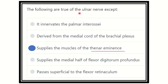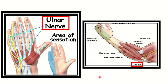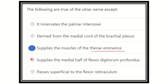The other options are all true. The ulnar nerve supplies both the palmar interossei and dorsal interossei — that is true. It is derived from the medial cord of the brachial plexus — also true. It supplies the medial half of the flexor digitorum profundus — true, as the ulnar nerve passes medial to the flexor digitorum profundus. And it passes superficial to the flexor retinaculum — also true, as seen in this picture where the ulnar nerve passes over the flexor retinaculum.